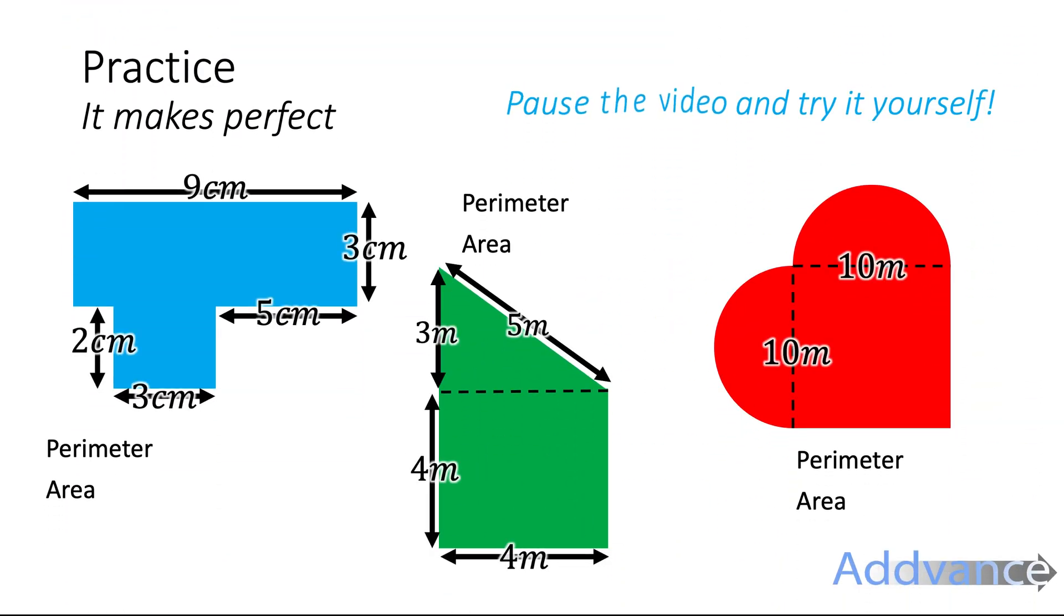That's all the examples from today's video. You've got some practice questions to try here. The blue shape is two rectangles touching each other. You need to figure out the three missing sides before you start working on the perimeter. Then work out the area.